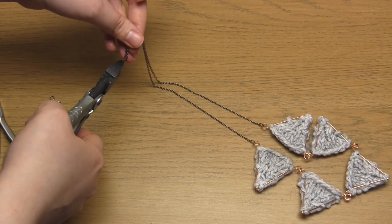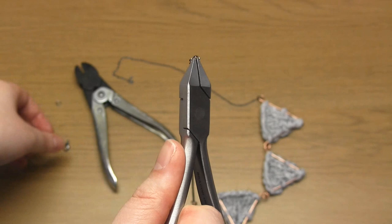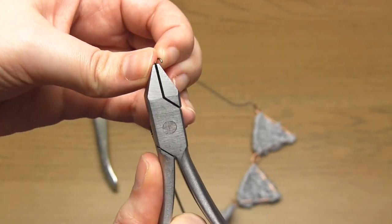And at the other end of the chain, add a jump ring to one side, and a jump ring and a lobster clasp to the other.